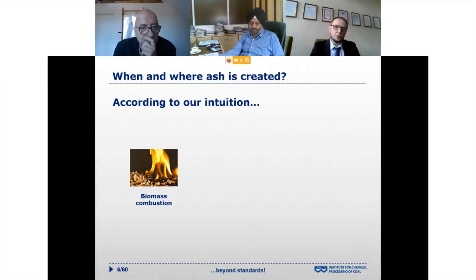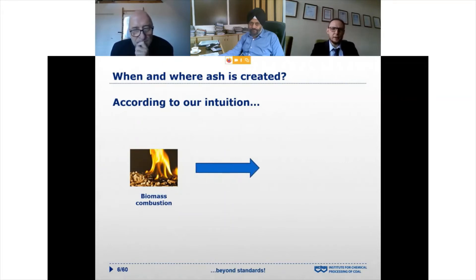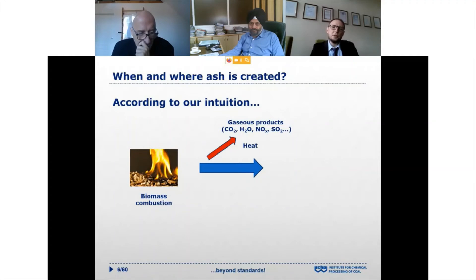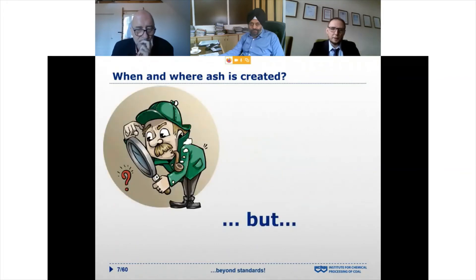If we consider combustion of a portion of biomass, coal, or whatever solid fuel, our intuition suggests that in the first stage we release gaseous products like carbon dioxide, water vapor, NOx, SOx, and so on. Of course we release heat, which is the main beneficial product of combustion, and finally we obtain the ash. So this scheme looks very simple. However, in reality this process is not so simple.